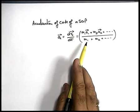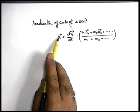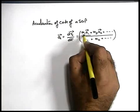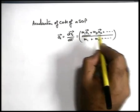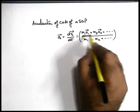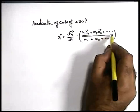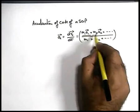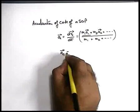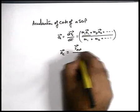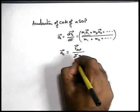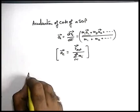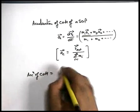If we have a careful look at this expression for the acceleration of centre of mass — in the numerator, m1a1 is the force acting on the particle of mass m1 according to Newton's second law, and similarly m2a2 is the force acting on the second particle. If we sum up all the forces acting on all the particles, all the internal forces cancel out and only external forces remain. So acceleration of centre of mass can be written as F_external total acting on the system divided by the sum of masses from i equal to 1 to n.